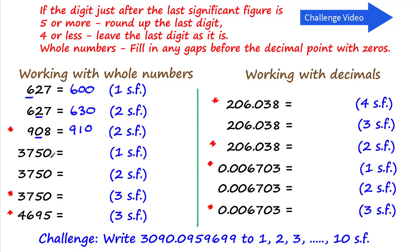For 3750 to one significant figure, the first significant figure is the 3, standing for thousands. The next digit is a 7 — it's 5 or more — so we add 1 to the 3, rounding it up to 4, then fill back three places with zeros: 4000. You can see that 3750 is closer to 4000 than to 3000. For two significant figures, the 7 is the second significant figure. The next digit is a 5 — five or more — so we round up, adding 1 to the 7, giving 3800.